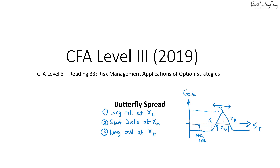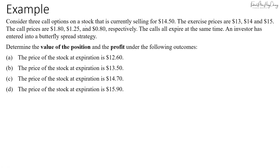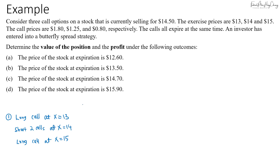Let's consider three call options on a stock currently selling for $14.50. The exercise prices are $13, $14, and $15, with call premiums of $1.80, $1.25, and $0.80 respectively, all expiring at the same time. To build the butterfly spread: we long the call at $13 (cost +$1.80), long the call at $15 (cost +$0.80), and short two calls at $14 (receiving 2 × $1.25 = $2.50). The net initial premium is $0.10.